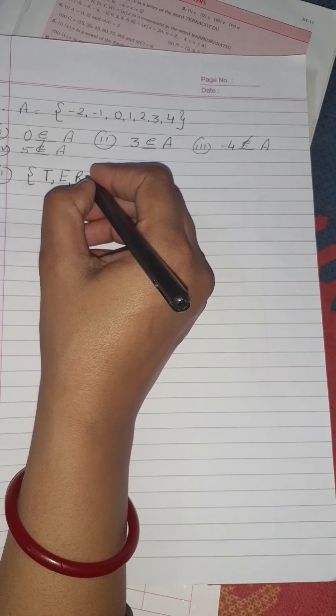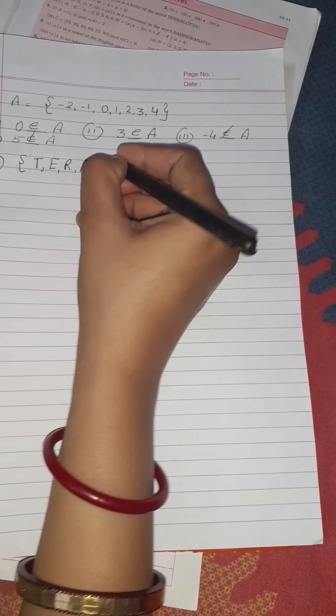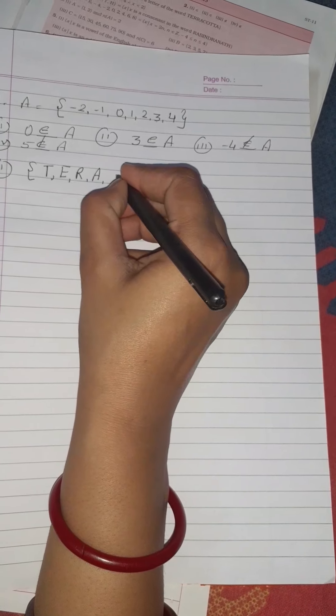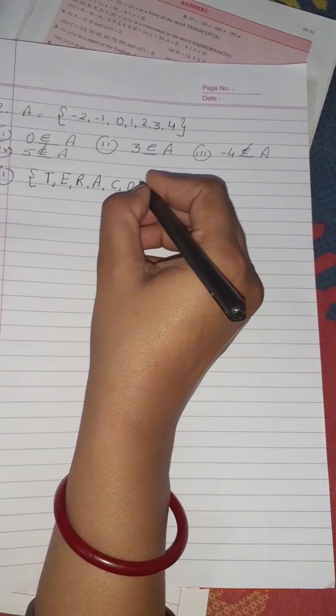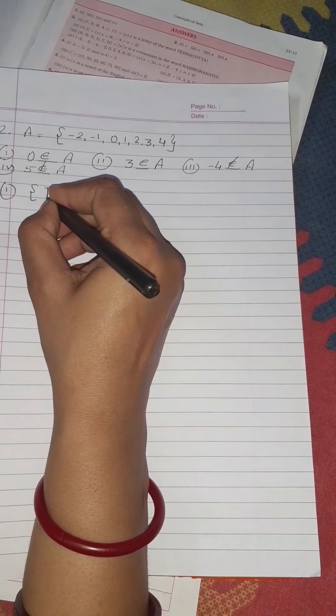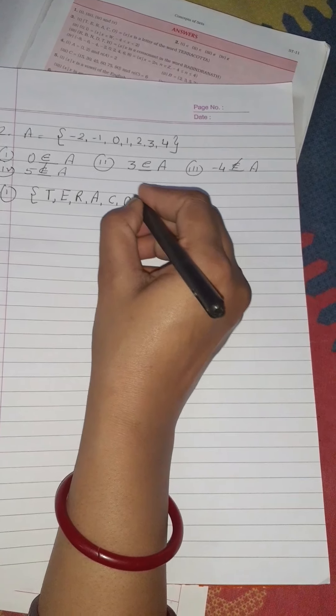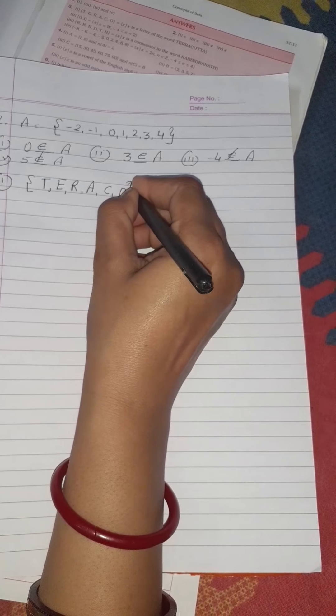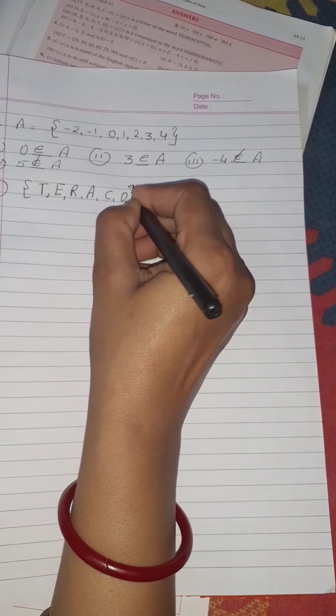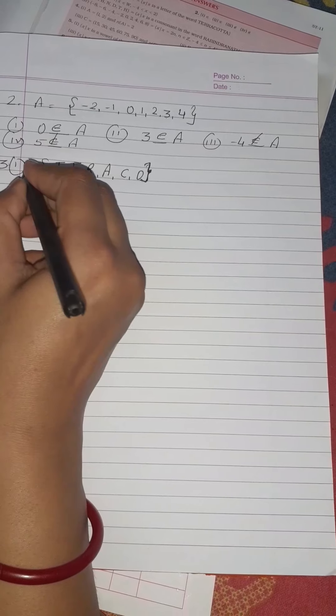Don't repeat R, then A, comma C, comma O, comma T. T is already repeated so don't write it. A is already repeated so don't write it. Close your bracket - it is called curly bracket. This is the roster form.